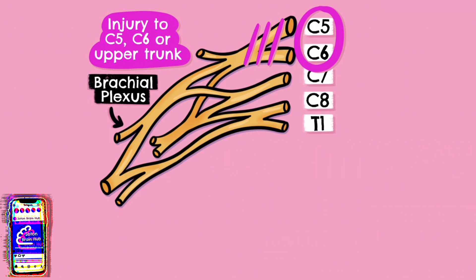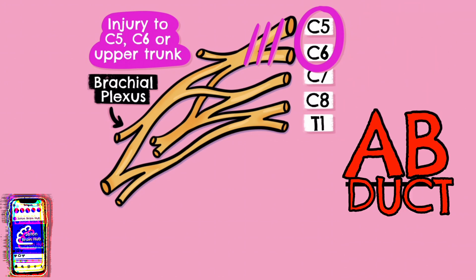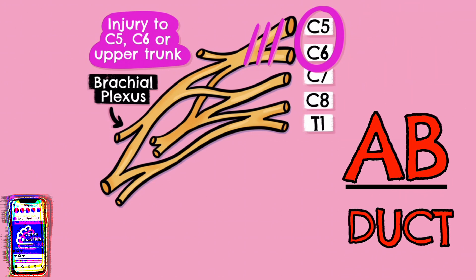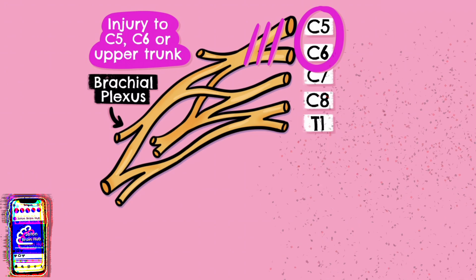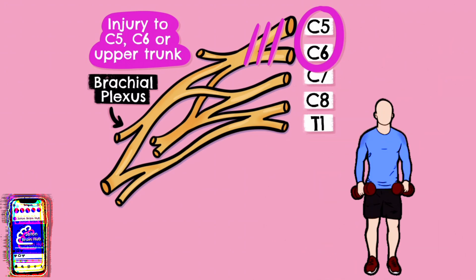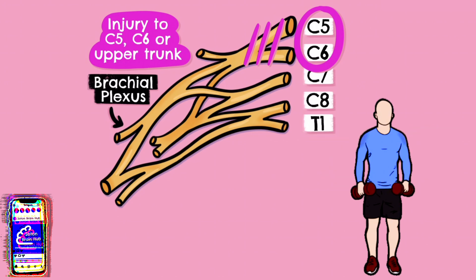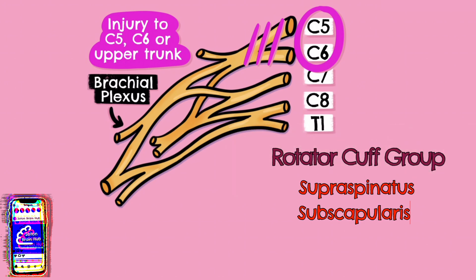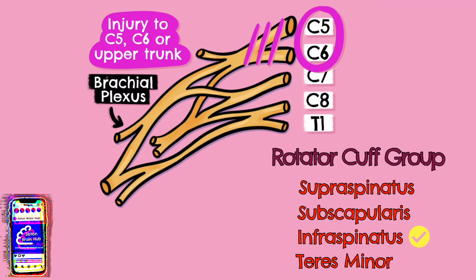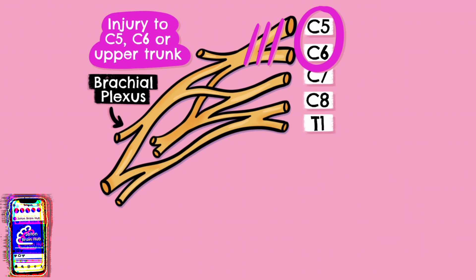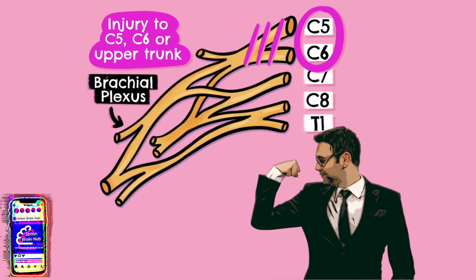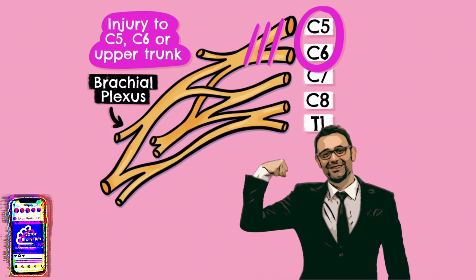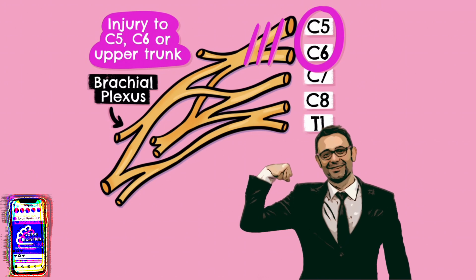The supraspinatus and the deltoid act in concert to abduct the arm — that's A-B-duct — moving it away from the midline as if doing a lateral raise in the gym, and without these innervated the arm will be stuck in the adducted position. The infraspinatus is one of our rotator cuff muscles and acts to externally rotate the shoulder, so without innervation to that muscle the shoulder will be fixed in internal rotation. The biceps brachii, brachialis and brachioradialis are three muscles that all act in concert to flex the elbow, so without these the elbow will be stuck in extension.